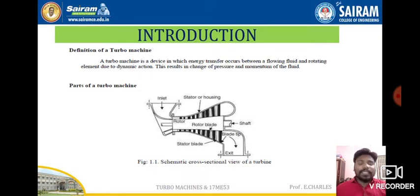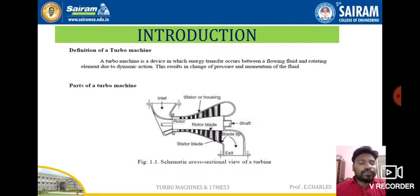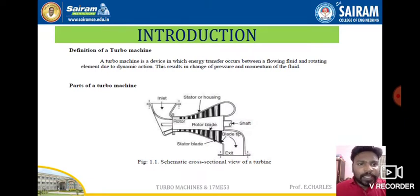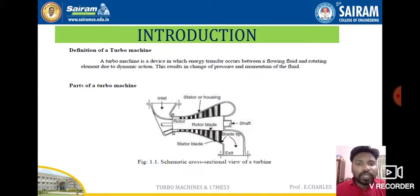Now we will see the parts of a turbo machine. This is the schematic cross-sectional view of a turbo machine — the cut portion. We can clearly see that there is an inlet through which water starts flowing, and there is a rotor with rotor blades and stator blades. In turbo machines, these are called blades, or sometimes buckets or vanes.